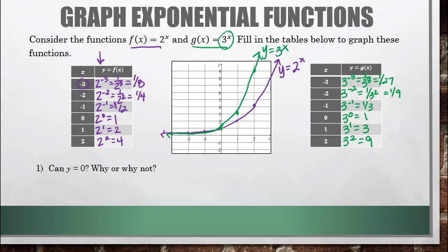Can y ever equal 0? Why or why not? Y equaling 0 would mean 0 equals 2 to the x. Is there an x value so that 2 to that power gives us 0? The answer is no, because 2 to any power is never going to equal 0. 2 to the 0 power is 1, because anything to the 0 power is 1. We will never be able to get 0, so y equals 0 can never be a point.